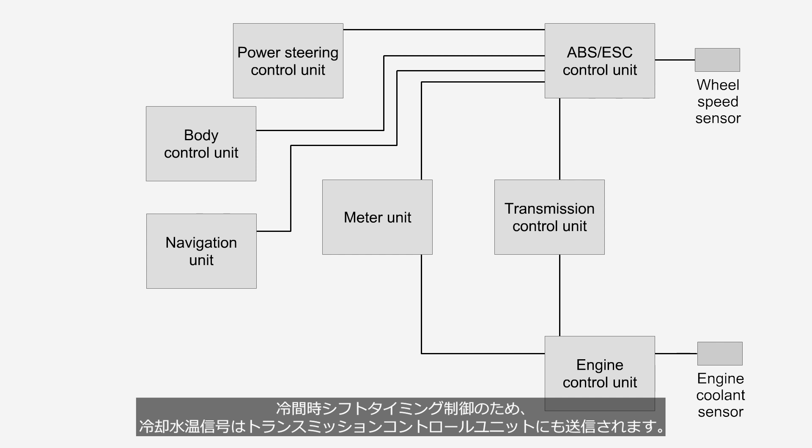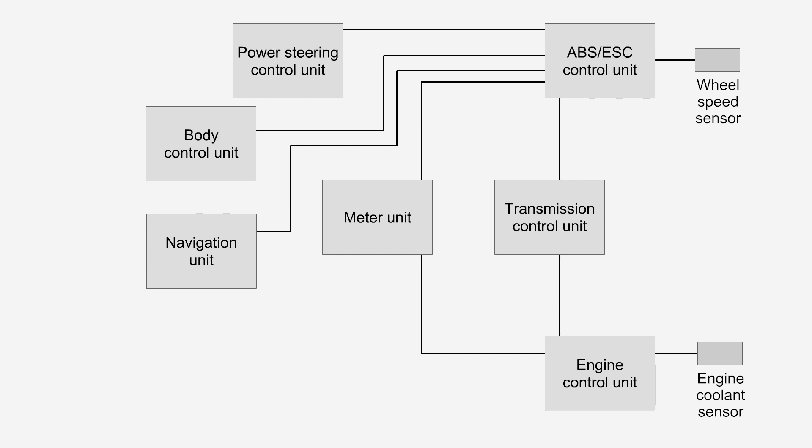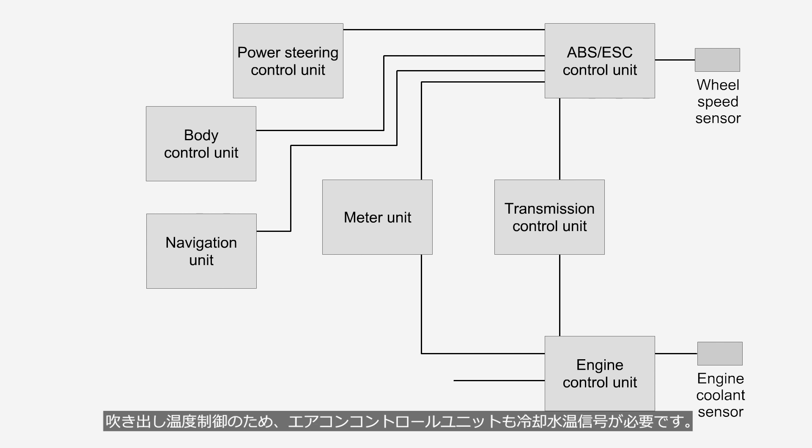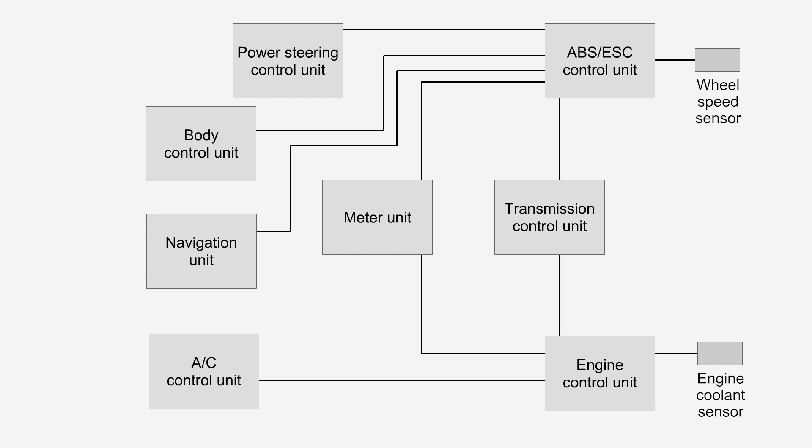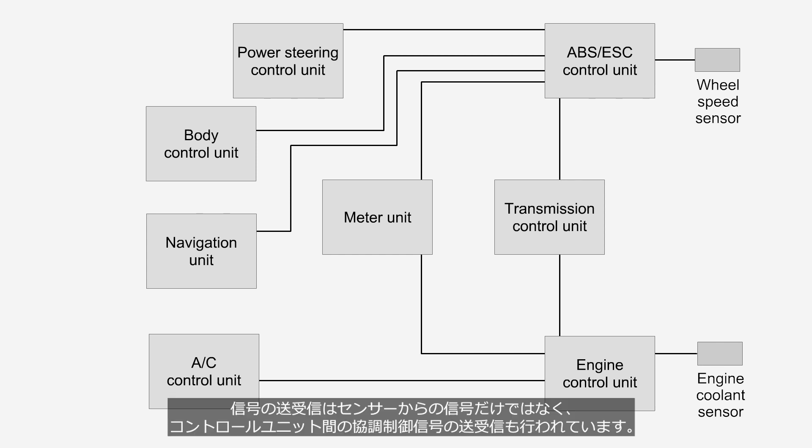For cold start shifting control, the signal is also transmitted to the transmission control unit. For blow air temperature control, the air conditioning control unit also needs the signal. Signals are transmitted and received not only from sensors, but also between control units for coordinated control.